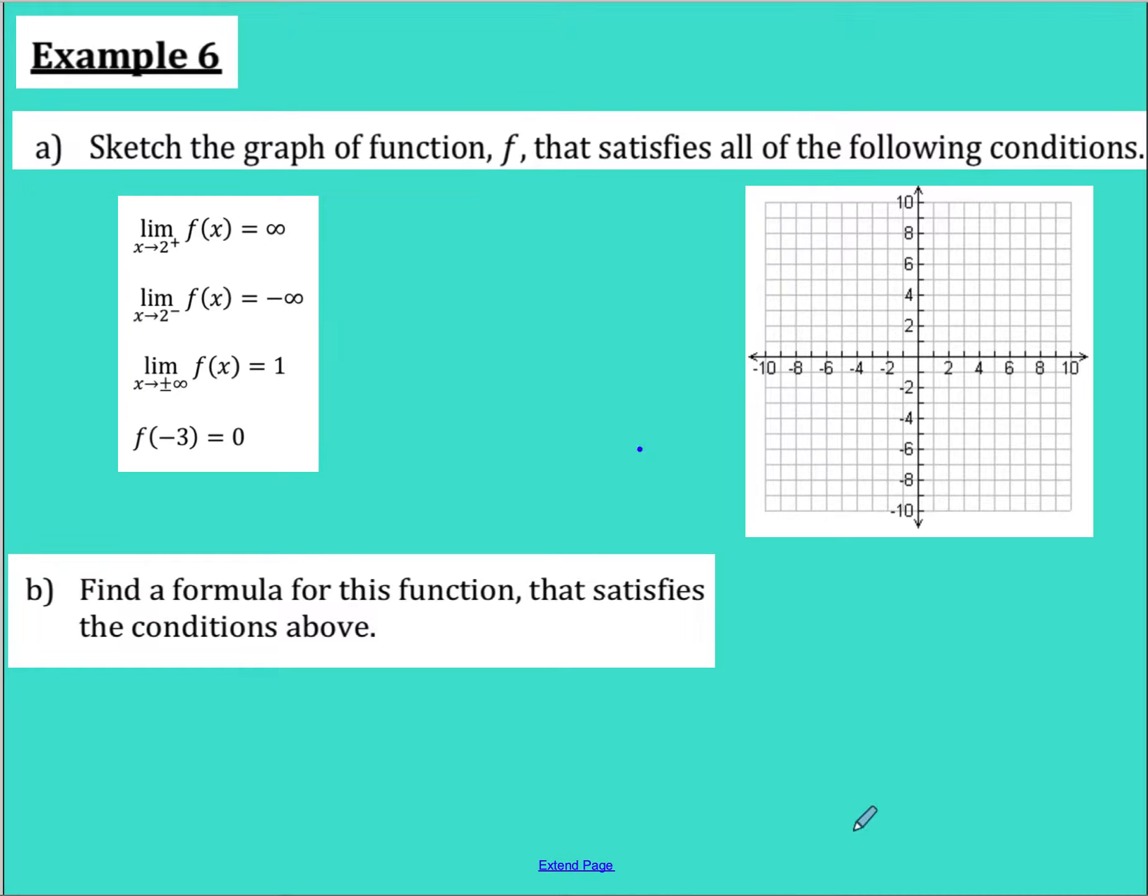All right, example six. We're going to sketch the graph of the function that satisfies the following conditions. So as x approaches two from the right, we're going to infinity, and as x approaches two from the left, we're going to negative infinity.